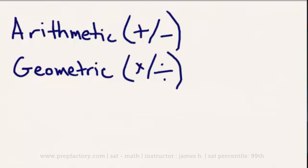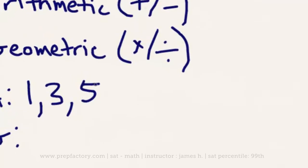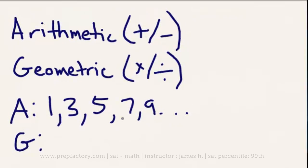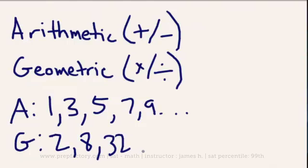An arithmetic sequence might look something like 1, 3, 5, 7, 9 — every number is separated by a difference of 2, since 1+2=3, 3+2=5, 5+2=7, 7+2=9, and this carries on indefinitely. Whereas a geometric sequence might look more like 2, 8, 32, 128 — each term is being multiplied by a factor of 4, since 2×4=8, 8×4=32, 32×4=128. A geometric sequence obviously gets into higher numbers much more rapidly.